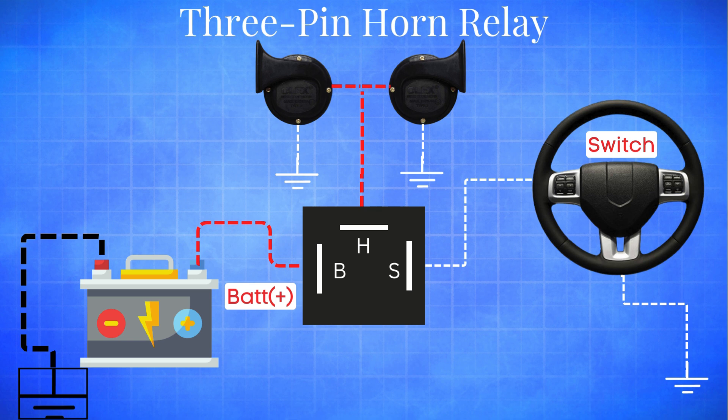When the horn is off, there's no current flowing between the B and S terminals. But when you press the horn switch, current flows from B to S, activating the coil inside the relay. The coil creates an electromagnetic field that closes the internal switch between terminals B and H. This allows battery power to flow to the horn, which completes the circuit and sounds the horn.